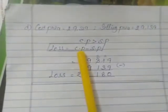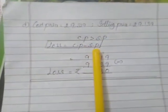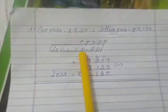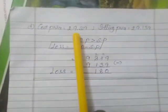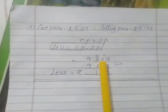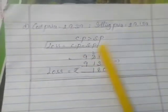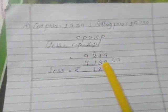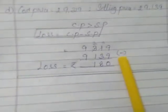When cost price is more than the selling price, the difference is loss. What is cost price? 9,319. What is selling price? That is 9,139. You can subtract directly.